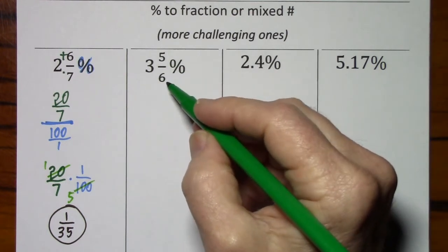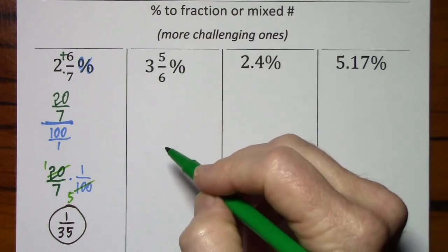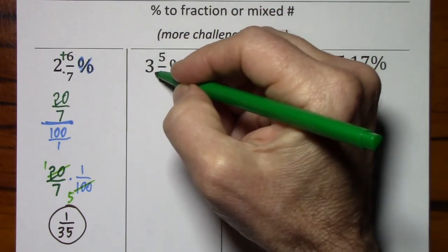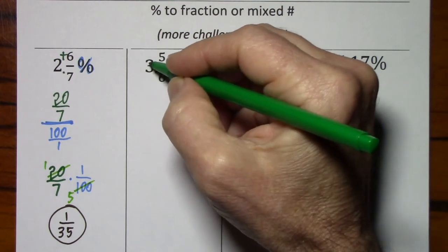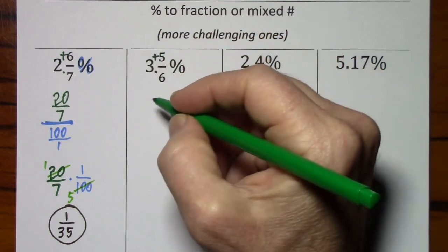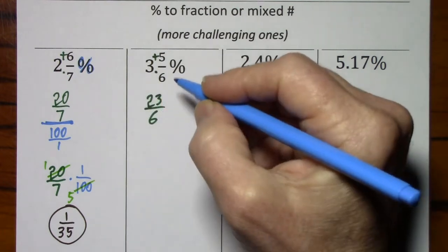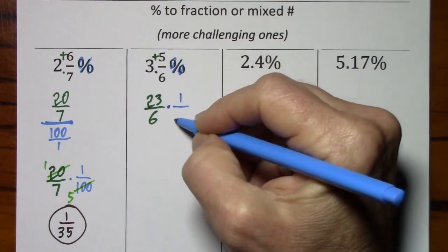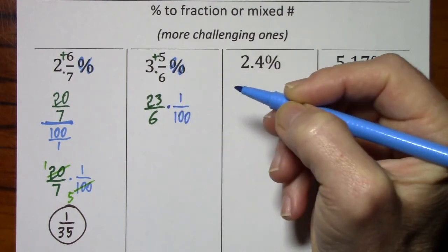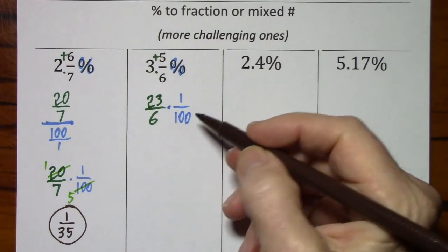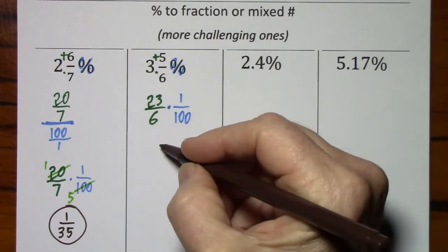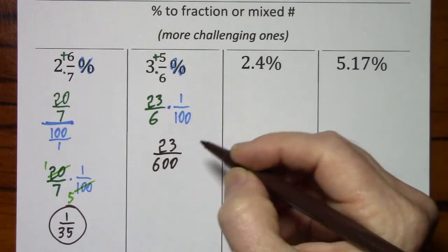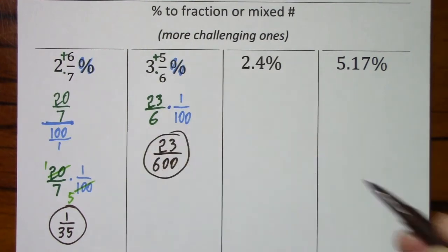So again, if we have a mixed number percentage, we want to write this without a percent sign. We'll write this as an improper. That's 18, 23 sixths. And the percent sign we'll write as times 1 one hundredth. In this case, nothing will reduce. So we end up with 23 six hundredths, and that's our answer.